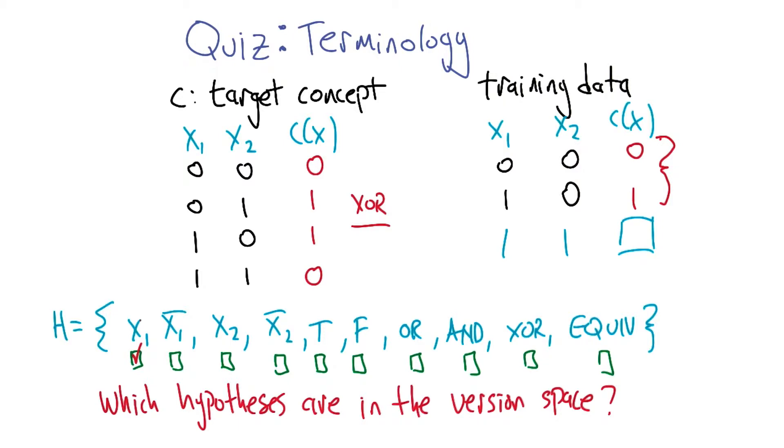Right, and then without even having to think about it, since x1 is in the version space, doing the opposite of x1 can't possibly be in the version space. Agreed. So we can skip that.